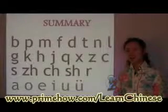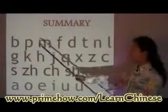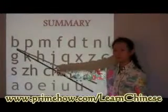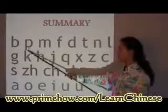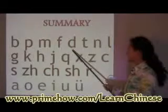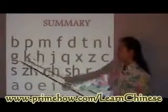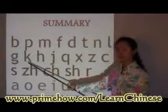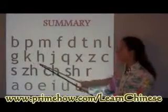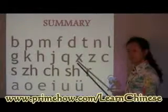Now we're just going to show you a quick summary of the entire Chinese alphabet called Pinyin. So we're going through: bō, pō, mō, fō, dē, tē, nē, lē, gē, kē, hē, jī, qī, xī — and that covers the main consonant sounds.